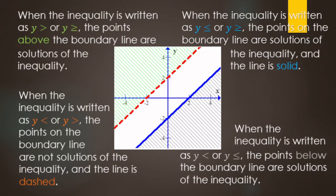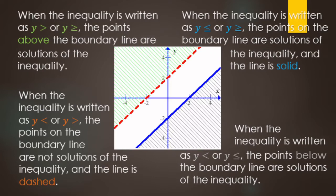When graphing the entire solution set, if we have strictly less than or greater than, we use a dashed line because those points on that boundary line are not solutions. If it's or equal to — less than or equal to, or greater than or equal to — we use a solid line because those points on the line are solutions. For greater than, we shade above the boundary line. For less than or less than or equal to, we shade below the boundary line.